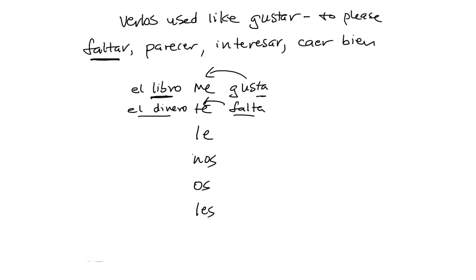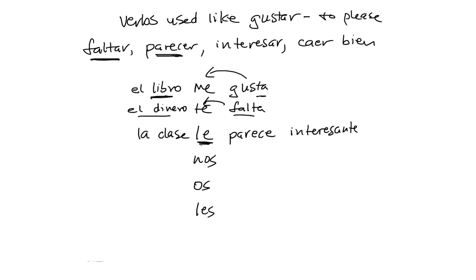Another verb used this way is parecer, which means 'to seem.' So if you want to say that something seems good or seems bad to somebody, we do it this way. For example, 'the class seems interesting to her' — in other words, she thinks it's interesting: la clase le parece interesante. Because le could be to her, to him, to usted, or to Juan, you would have to clarify by saying ella. So: the class seems interesting to her.